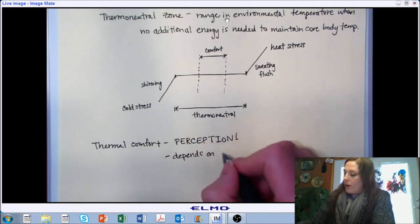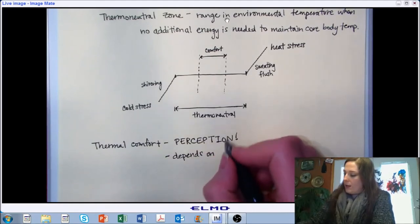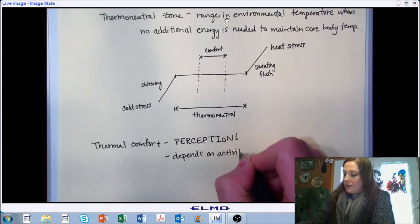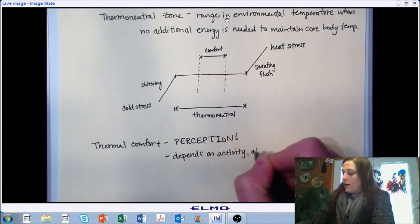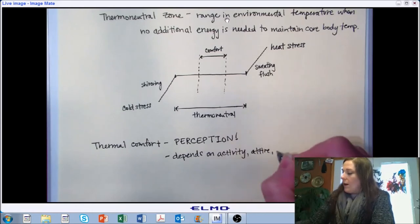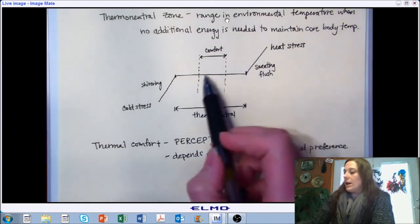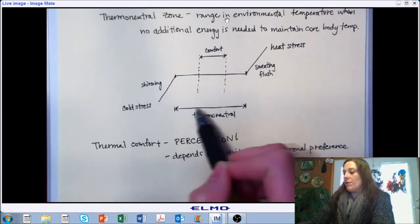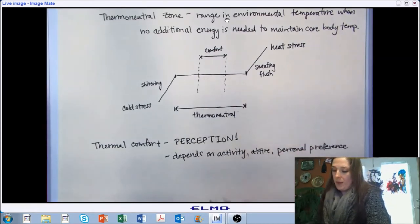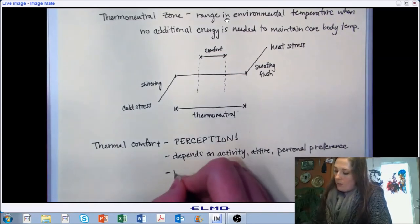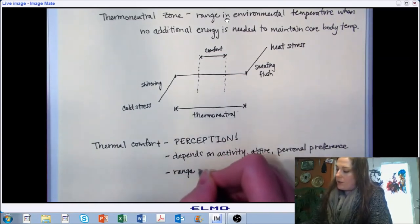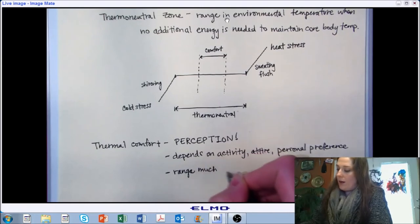This thermal comfort — our perception of thermal comfort — is going to depend on activity (what we're doing), attire (what we're wearing), and in general, personal preference. This range of comfort is going to have a lot more variability to it than the range of function. Also, the range in general is going to be much narrower than our thermoneutral conditions.